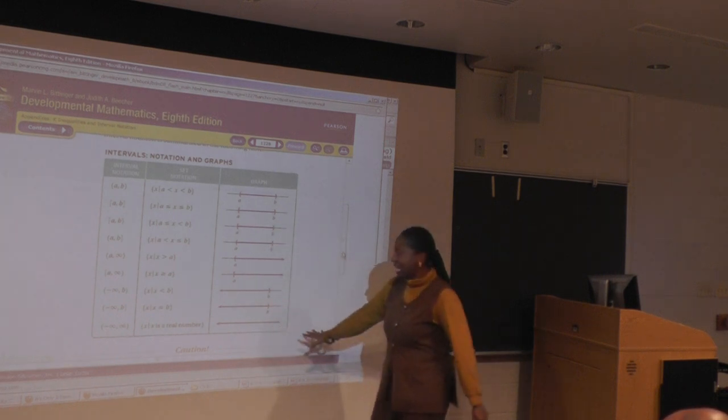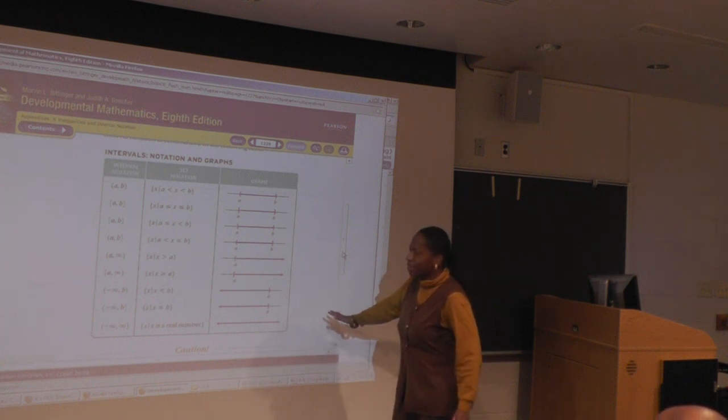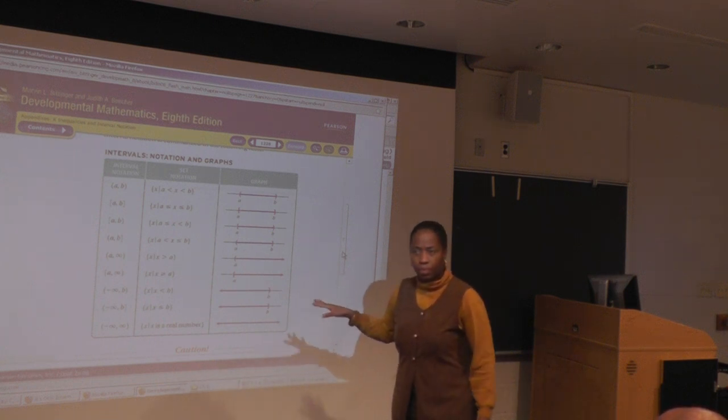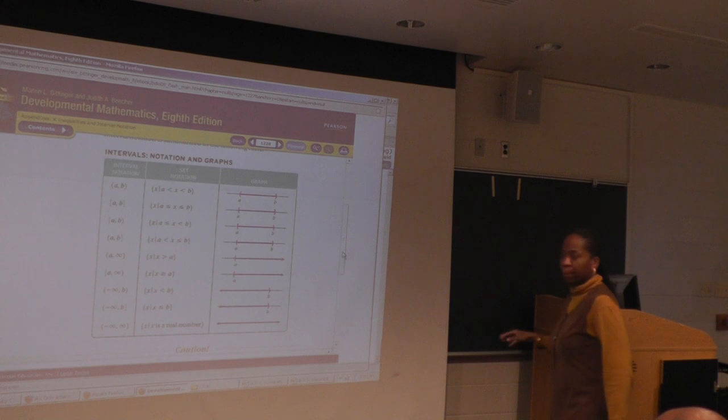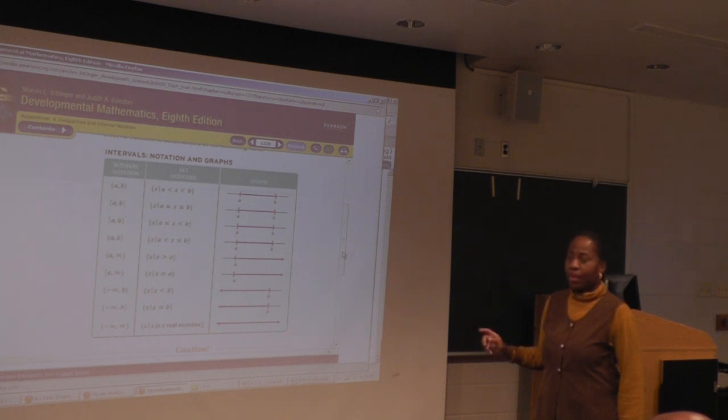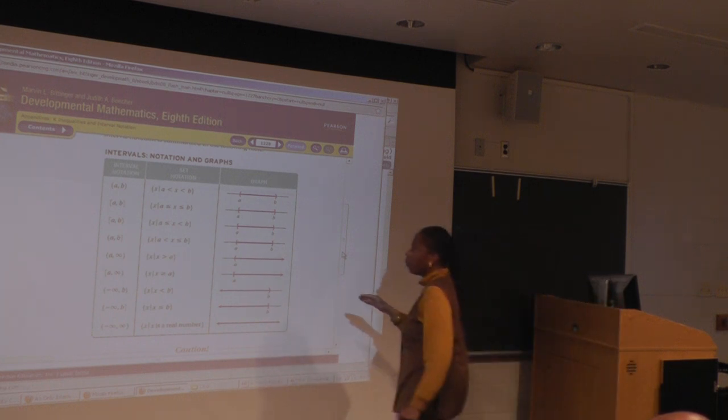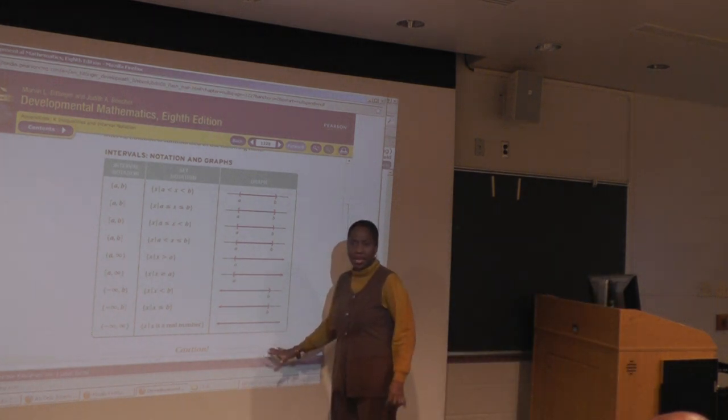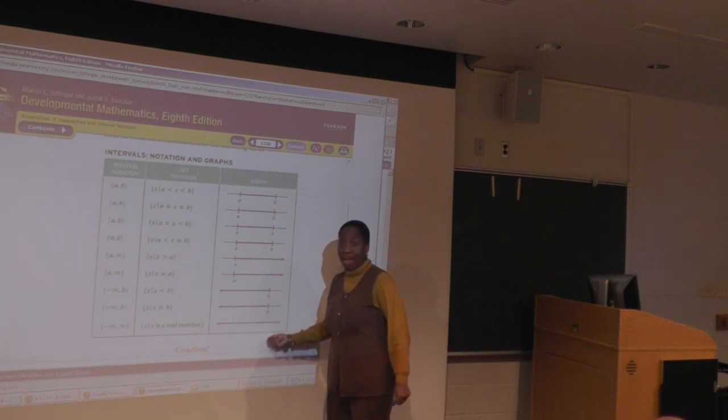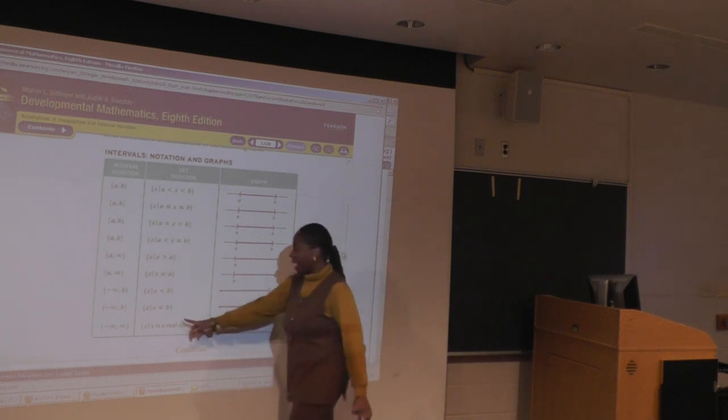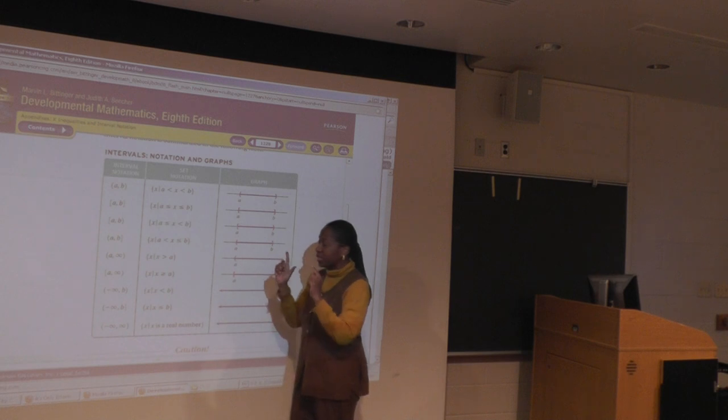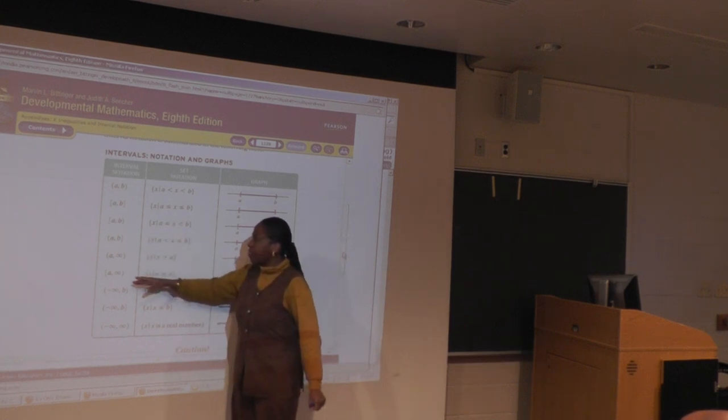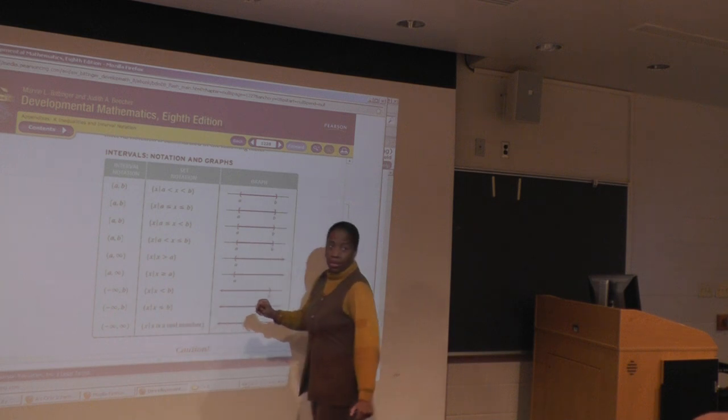The only one it doesn't take you through, do you notice anything missing based on what we did? The only thing missing is where we had no solution. If it's no solution, there is no graph. And you graph it and you put it in set notation as the empty set.